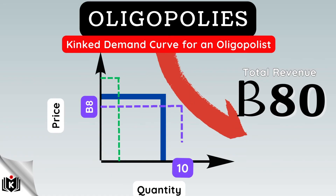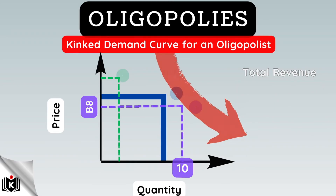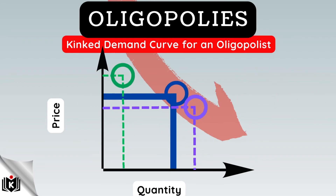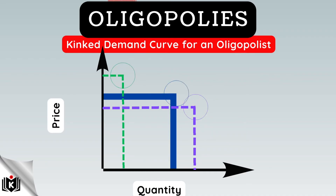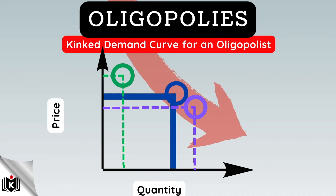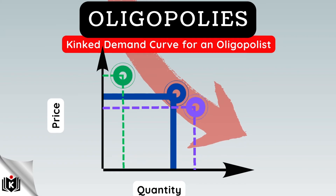If the firm tries to increase profit by reducing the price by $2 to $8 and increasing its total sales, the total revenue would be $80. The oligopolist is therefore faced with a difficult decision, because in both instances it will not be beneficial to the firm. Increasing the price of goods or reducing the price to increase sales will not lead to greater revenue earned.